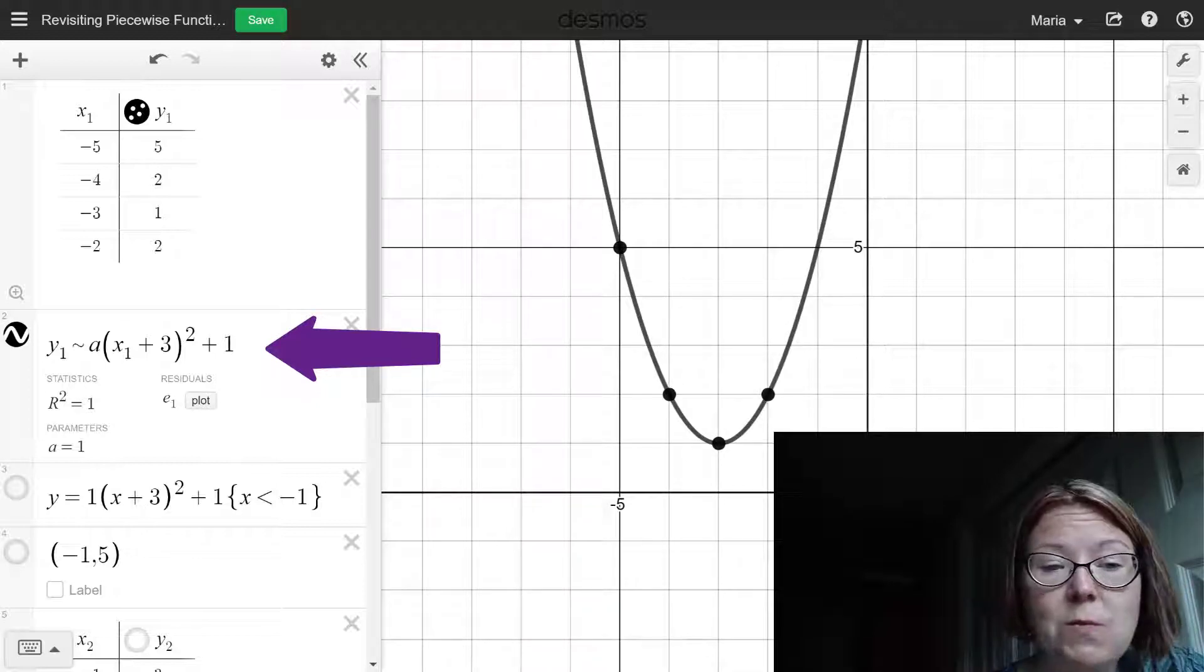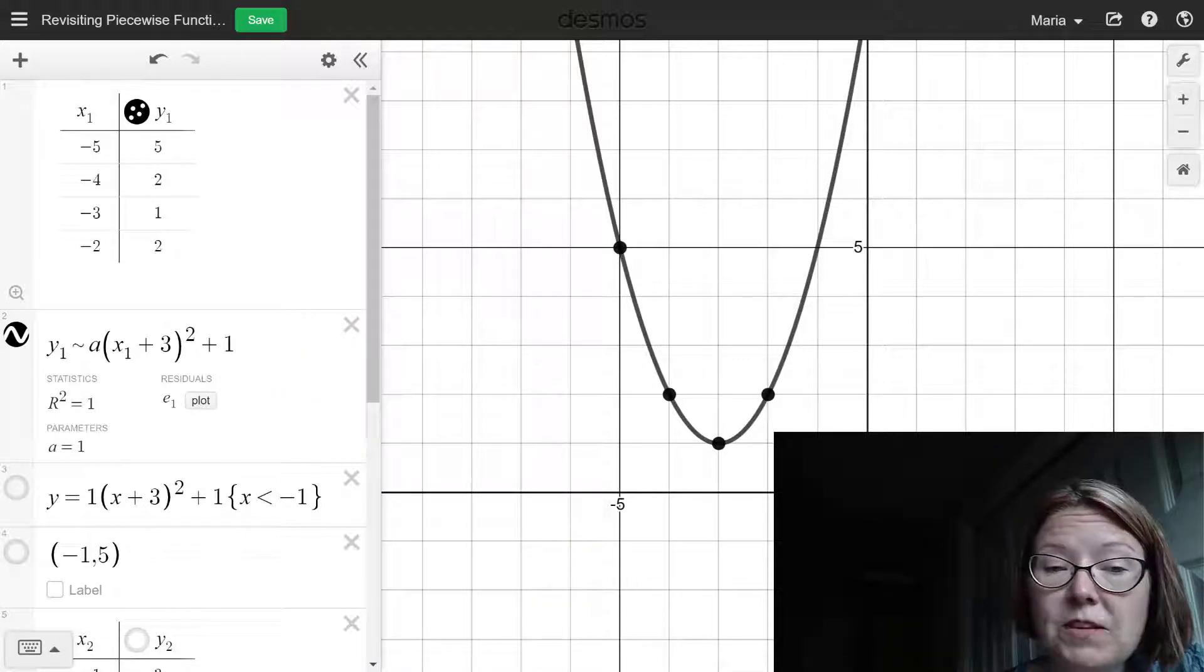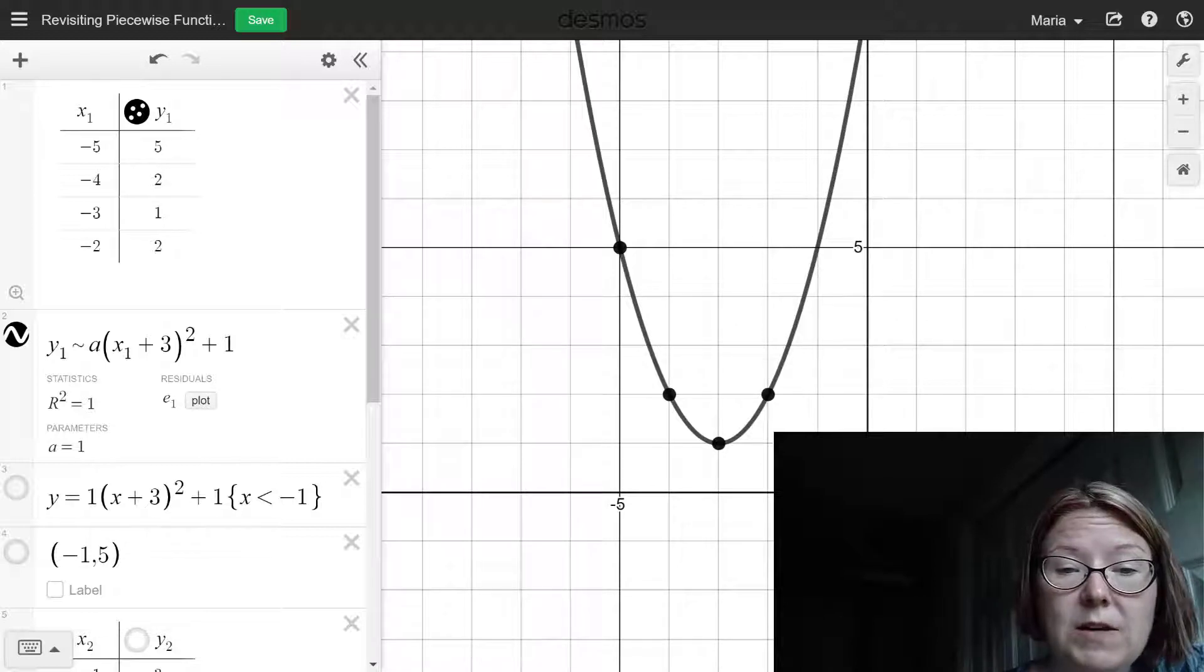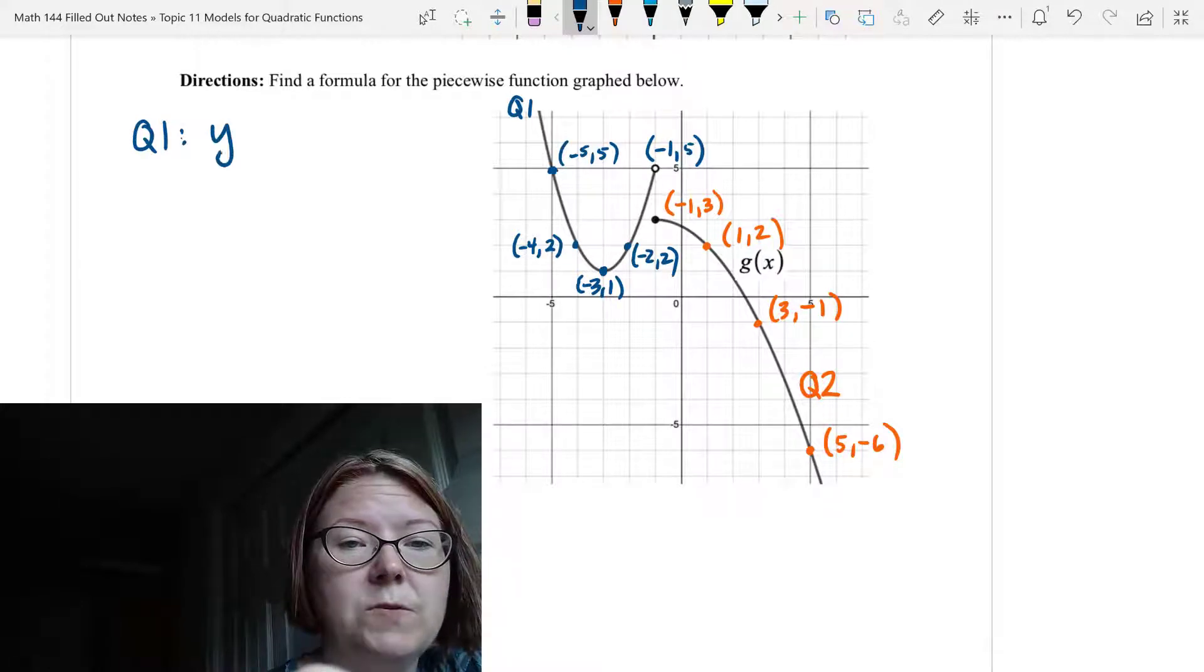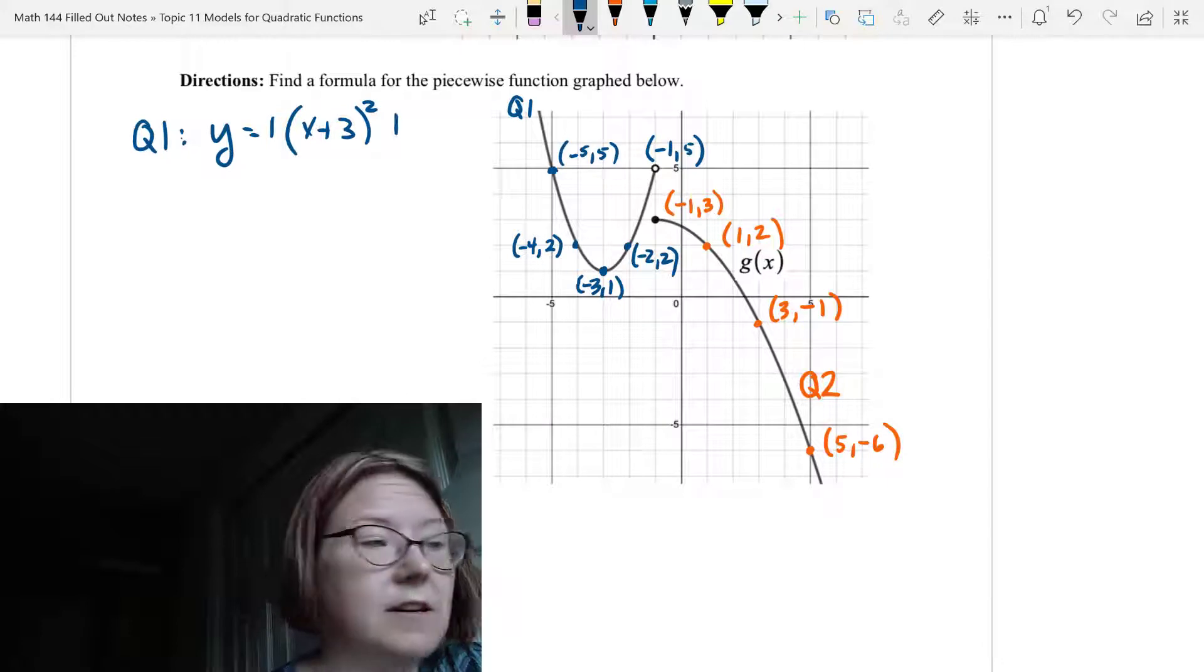My regression model is going to be y₁ tilde to get our estimation, a times (x₁ + 3), close the parentheses, square it, plus 1. The 3 and the 1 come from the vertex. The a value is really the only thing we don't know, and we get a very nice model that goes through the points with an a value of 1. Let's write that down. Q1 is y equals 1 times (x + 3)² plus 1.